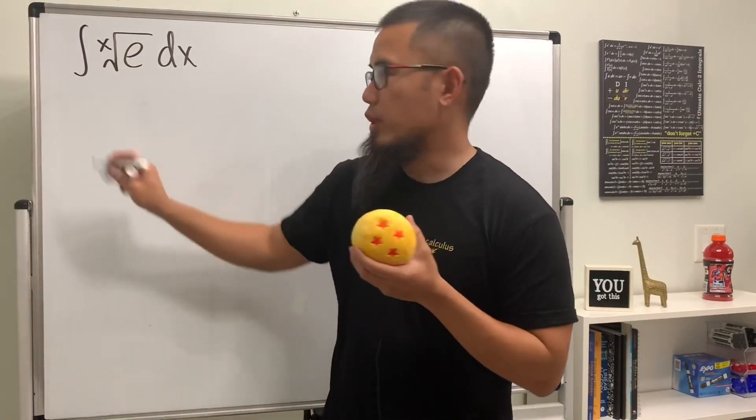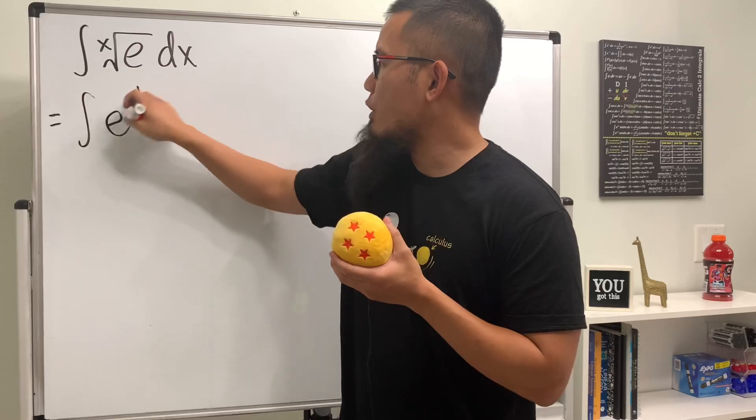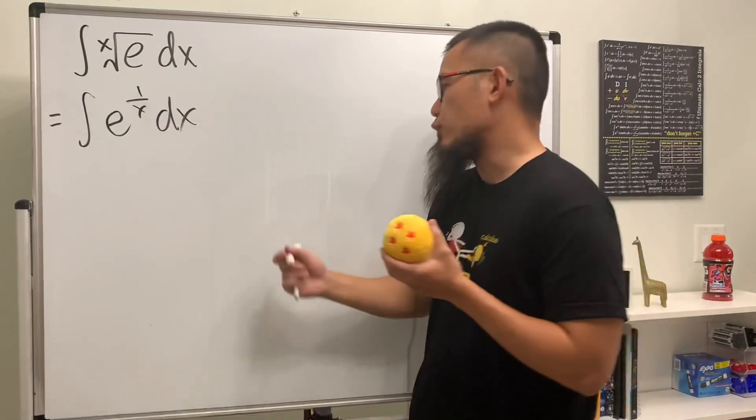So how can we integrate x root of e? Well, first we can write this as the integral of e to the one over x power. And yes, we can use integration by parts. Of course, do the DI setup.